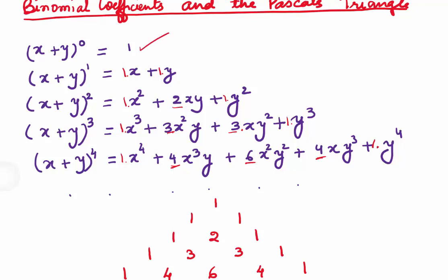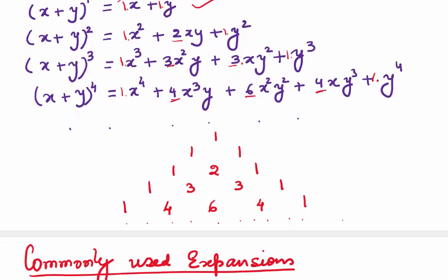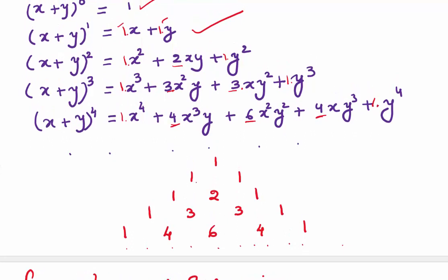We form Pascal's triangle with these coefficients. First write 1 at the top, then 1 and 1 from x plus y. Adding 1 and 1 gives 2, so that gives us the 2 for x plus y squared. Adding 1 and 2 gives 3, adding 2 and 1 gives 3, giving coefficients 1, 3, 3, 1 for x plus y cubed. Then adding 1 and 3 gives 4, 3 and 3 gives 6, 3 and 1 gives 4, for x plus y to the power 4.